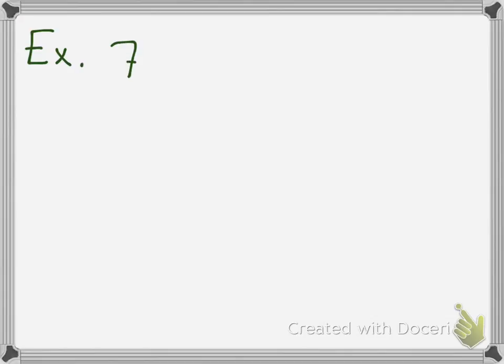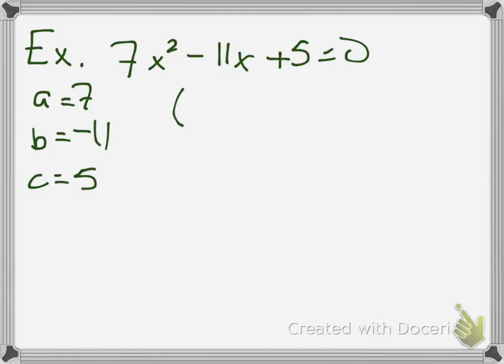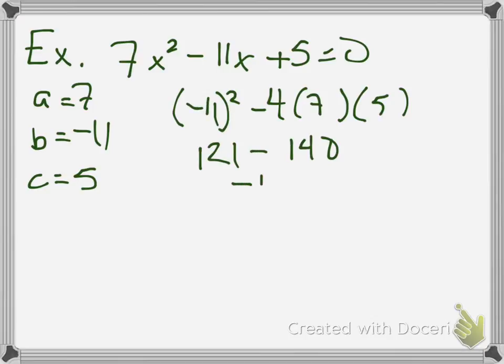Here's an example. 7x squared minus 11x plus 5 equals 0, so a is 7, b is negative 11, and c is 5. Plug that in into the discriminant. And you're going to basically just do some calculations. I get an answer of negative 19. That right there is my discriminant. So if I were to ask for the discriminant, you would tell me it's negative 19.